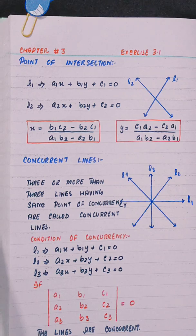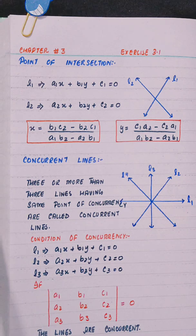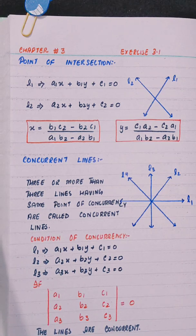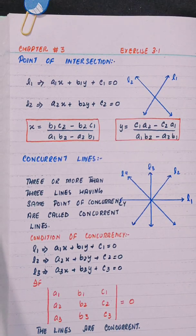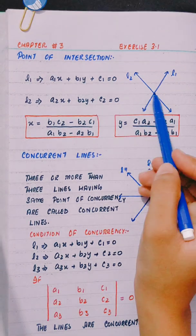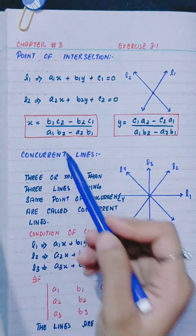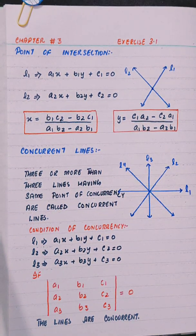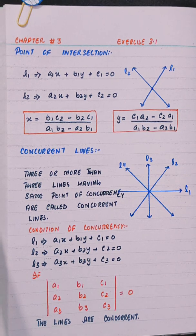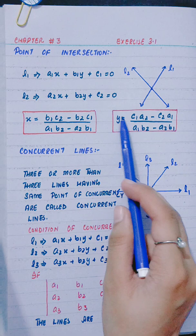Hello everyone, this is Rabia Aslam. Our today's topic is how to find the point of intersection. If we have two lines, for example, L1 = A1x + B1y + C1 = 0 and L2 = A2x + B2y + C2 = 0. The formula to find the point of intersection is: x = (B1C2 - B2C1) / (A1B2 - A2B1) and y = (C1A2 - C2A1) / (A1B2 - A2B1). The denominator remains the same; only the numerator differs.